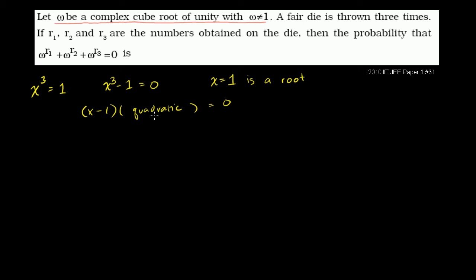To figure out what the quadratic is, we do a little bit of algebraic long division. We divide x minus 1 into x cubed minus 1. Let me set it up with space for each degree: x cubed, x squared, x to the first, and then the constant term negative 1. We just do algebraic long division here.